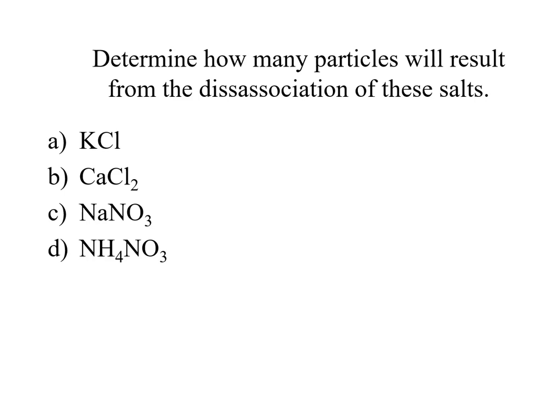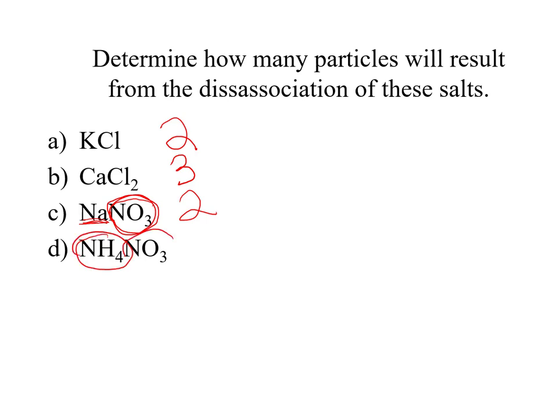In A, potassium chloride — one potassium and one chlorine, each dissociating — gives us two particles. In B, calcium chloride has one calcium and two chlorines, so it dissociates into three particles; remember, subscripts tell you how many of each element are present. In C, sodium nitrate is a little tricky — it's still only two particles because nitrate is a polyatomic ion and its elements stay together. In D, ammonium nitrate has two polyatomic ions — ammonium and nitrate — giving two particles.